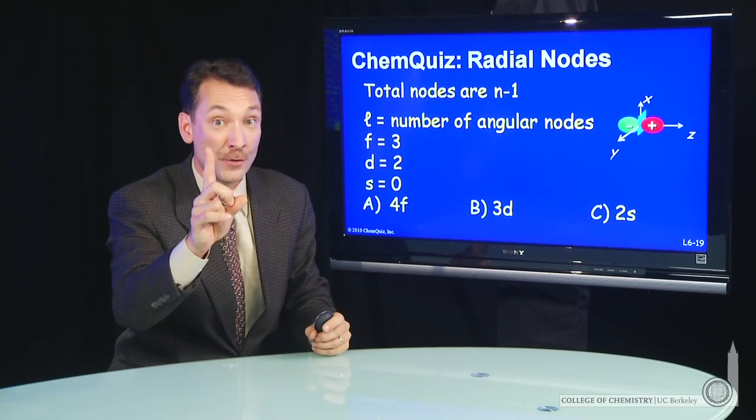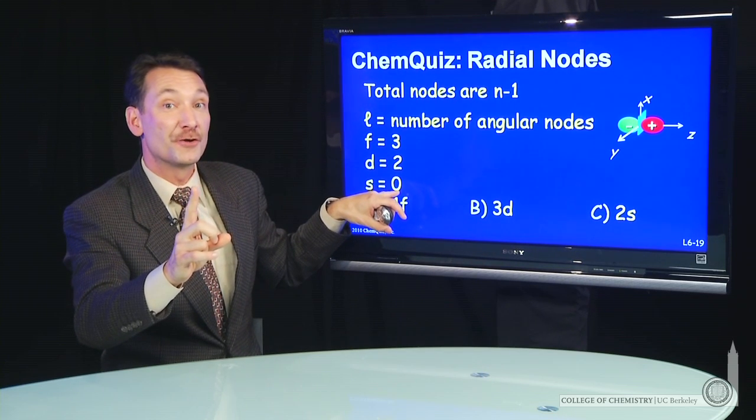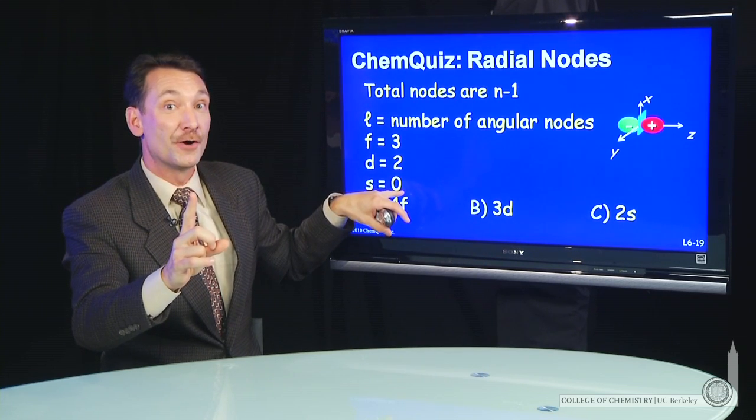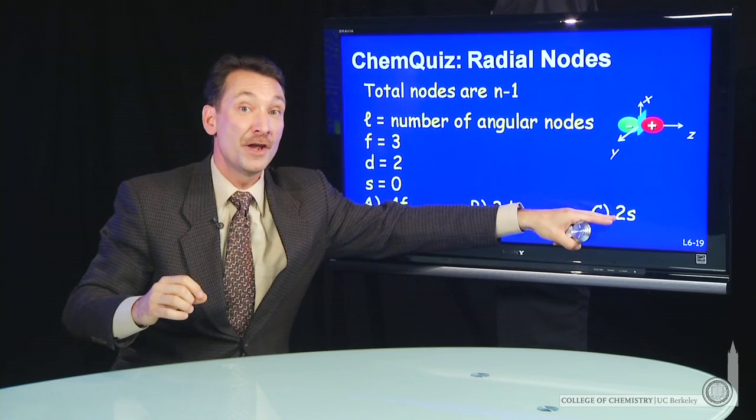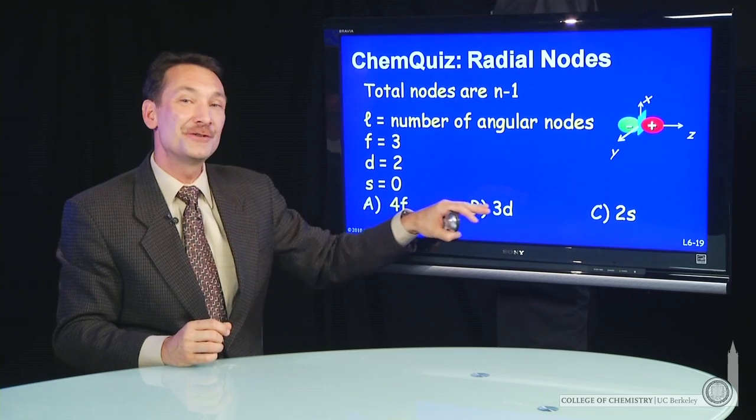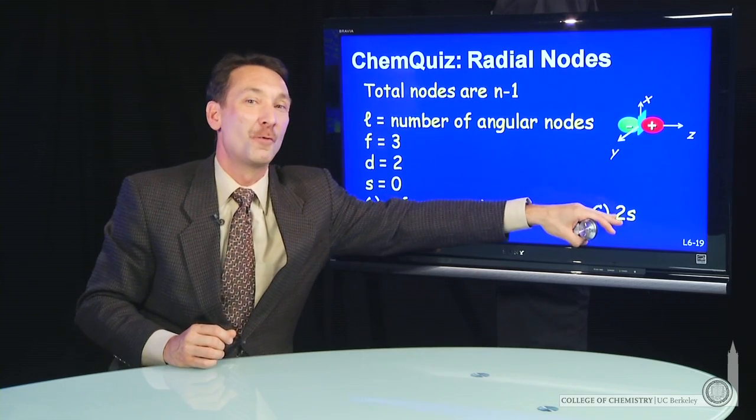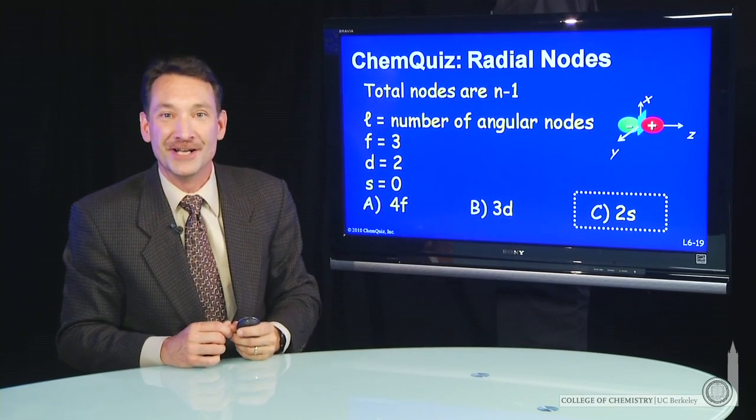The 2s has one node. s equals 0, so the value of l is 0, so there are 0 angular nodes. So that one node must be a radial node. So no radial nodes, no radial nodes, one radial node. The 2s has the largest number of radial nodes.